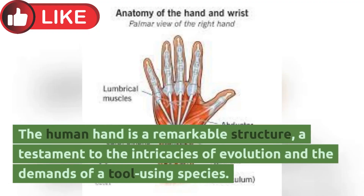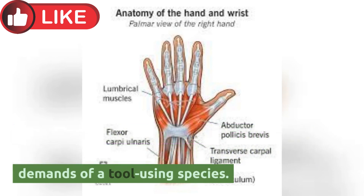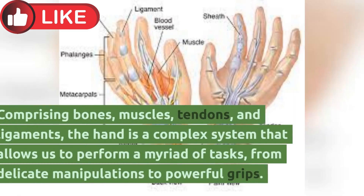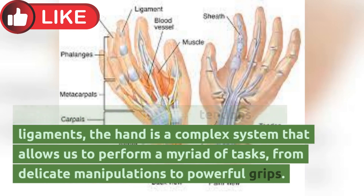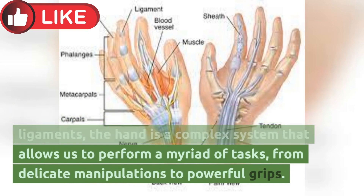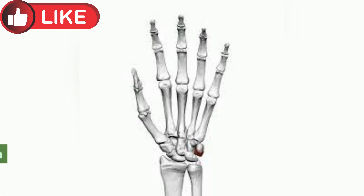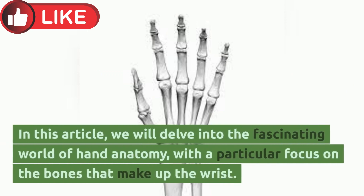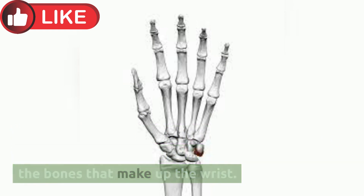The human hand is a remarkable structure, a testament to the intricacies of evolution and the demands of a tool-using species. Comprising bones, muscles, tendons, and ligaments, the hand is a complex system that allows us to perform a myriad of tasks, from delicate manipulations to powerful grips. In this article, we will delve into the fascinating world of hand anatomy, with a particular focus on the bones that make up the wrist.